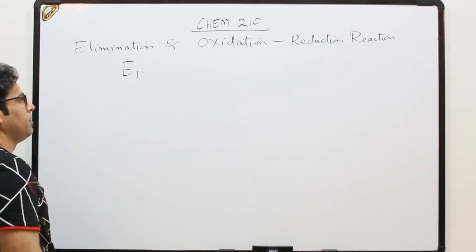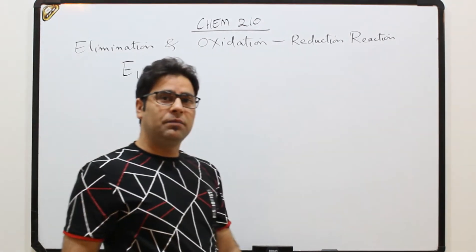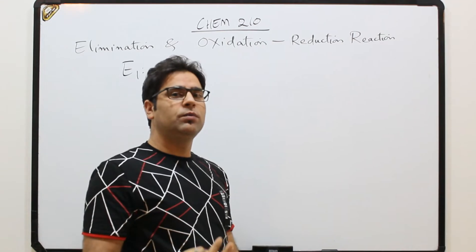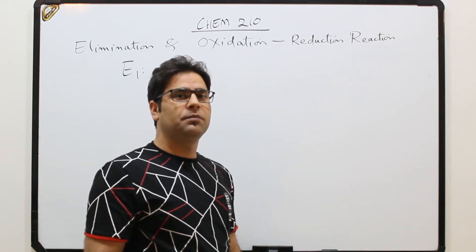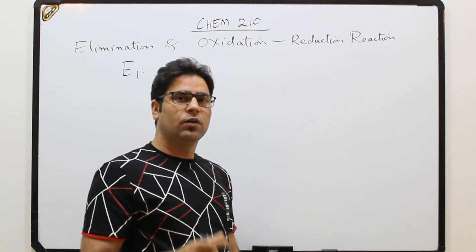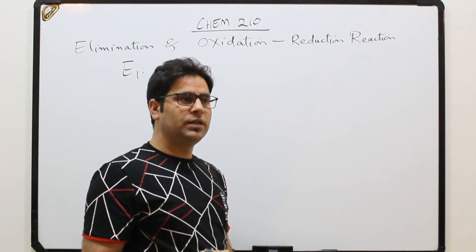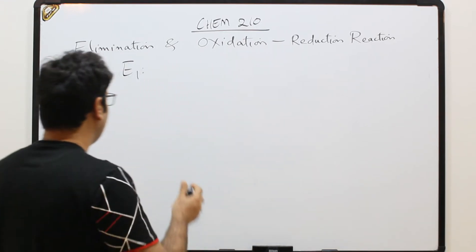E1 — as you know, E1 is elimination and unimolecular, because the rate-determining step involves only one molecule. That is why it is called unimolecular.